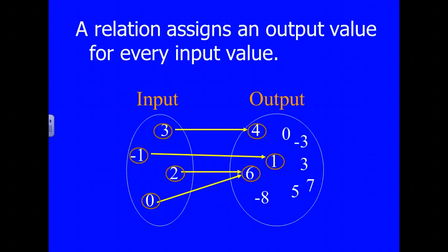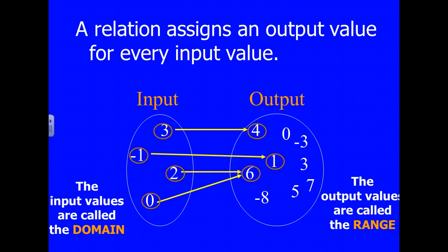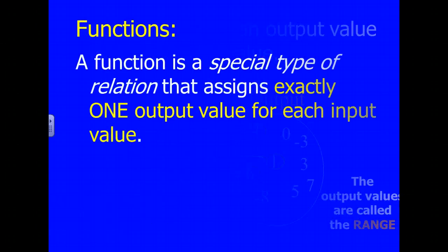Now, a relation assigns an output value for every input value. So if you look here on the left-hand side, we have the input values, and over here we have the output values. And each one of the inputs is matched up with each one of the outputs over here. Okay, and then the values of the input are called domain, and then the output values are called the range.